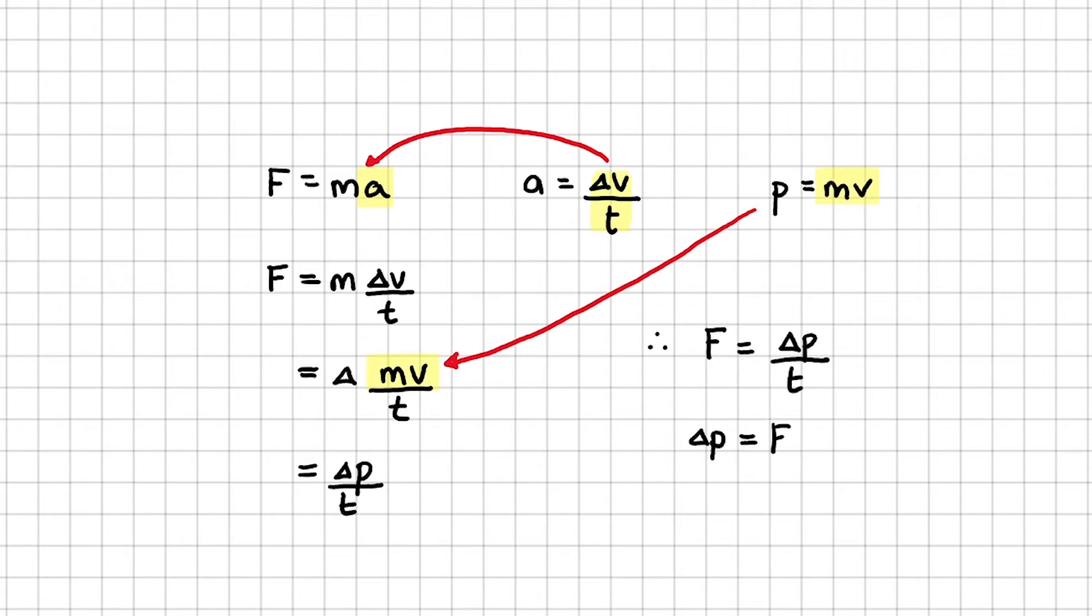We tend to use a rearranged version of this equation, writing it like this: change in momentum is equal to force multiplied by the time of impact. And instead of referring to this as the change in momentum, we give it a special name, impulse.